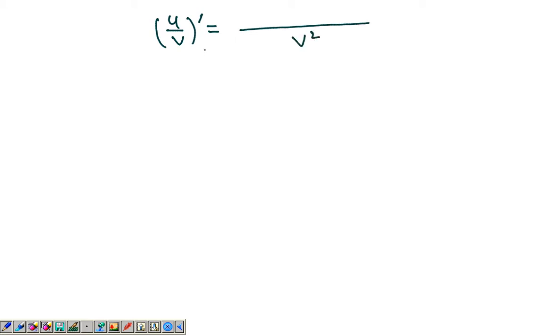So it's simply: you square the function in the denominator and place the square in the denominator. In the numerator, you keep the function in the denominator as it is, differentiate the function in the numerator, and then subtract from this term the function in the numerator as it is times the derivative of the function in the denominator. That's what the quotient rule says.